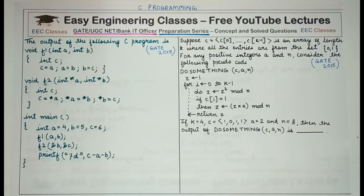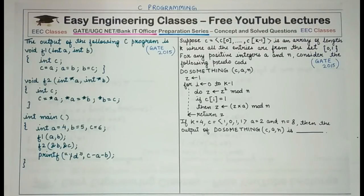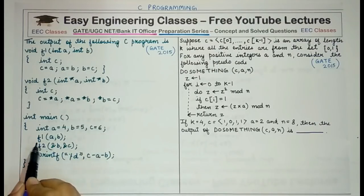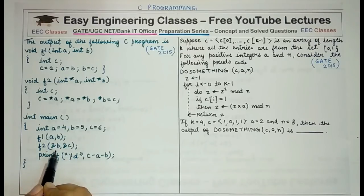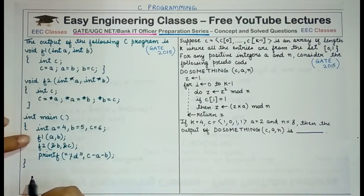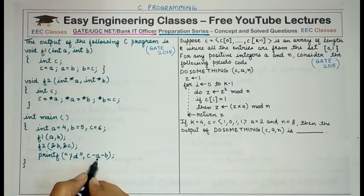So in today's lecture, we will take up two questions from the programming in C subject. The first question asks for the output of a given C program. We are given two functions f1 and f2, and in the main function the statements are: int a equal to 4, b equal to 5, c equal to 6, then f1 of a and b is called, then f2 with the addresses of b and c. The last statement is printf of c minus a minus b.